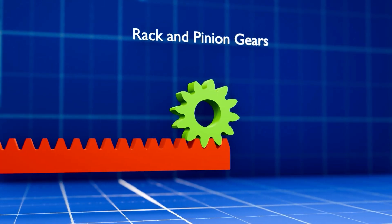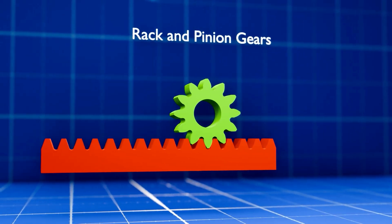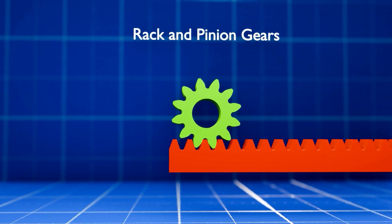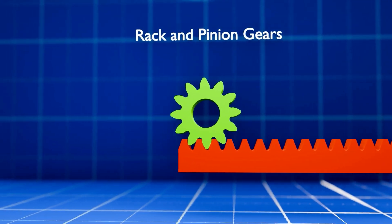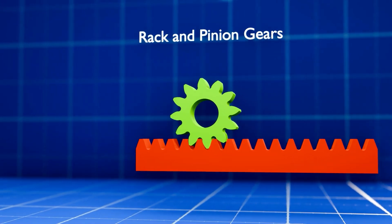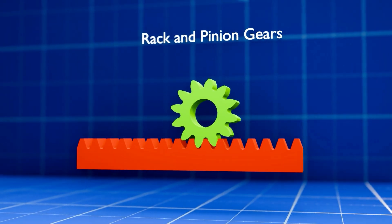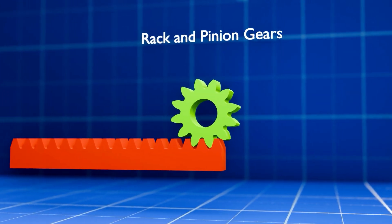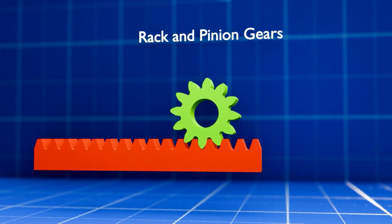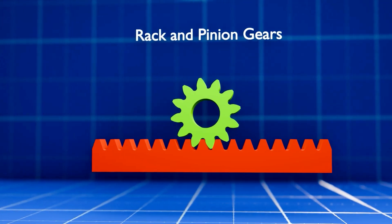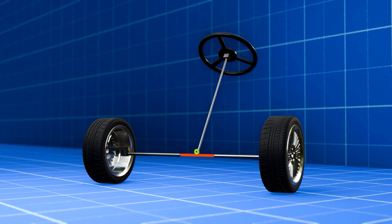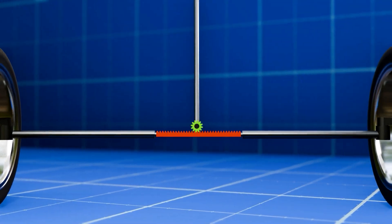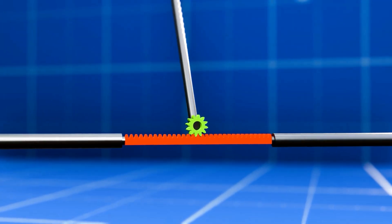To convert rotary motion into linear motion, or vice versa, the rack and pinion system is used. This consists of a circular gear, the pinion, meshed with a straight bar with teeth cut along its edge, the rack. As the pinion rotates, it pushes the rack along, creating linear movement. Its ability to convert rotation into linear movement makes it ideal for steering systems in vehicles.